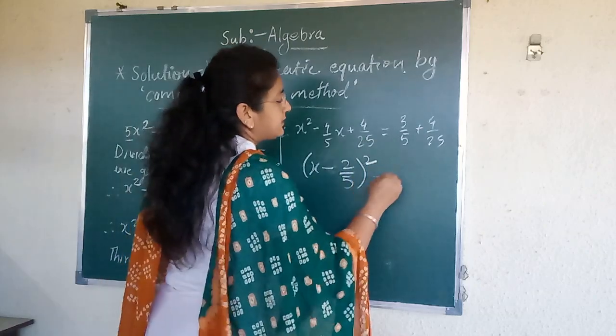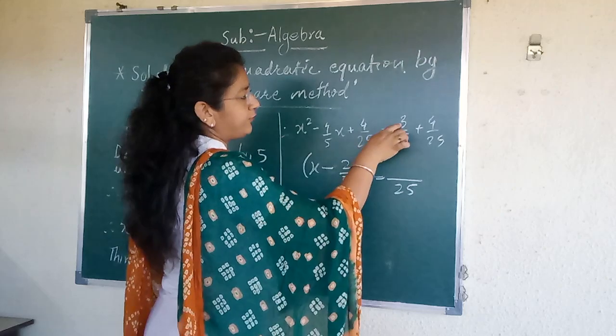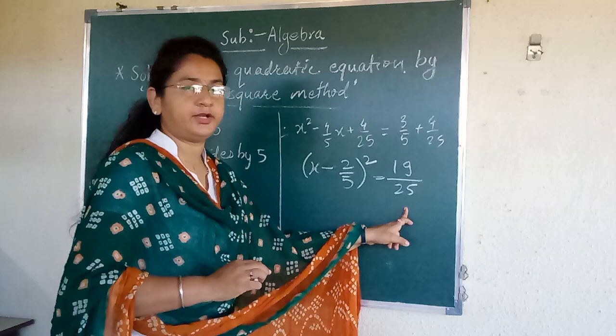Now here answer is denominator 25. So 15, 15 plus 4, 19. Here we will get 19/25.